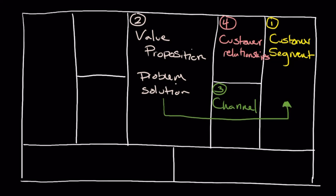We've covered customer segments, value propositions, channels, and customer relationships. Now moving to block five: our revenue model. Here we answer the question of how we actually make money. There are lots of different revenue models — whether that's asset sales, subscription, licensing, or whatever it might be — and this is where we identify how we are actually going to make money.